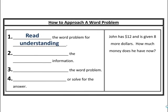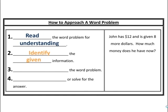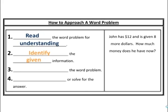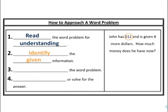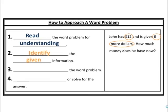Next step: identify the given information. This is where a lot of students start out. Many are told to underline or circle the numbers, but the numbers alone are not enough — though they're very important to pay attention to. So we're going to circle twelve dollars and eight more dollars. Notice I circled the unit along with the given information.